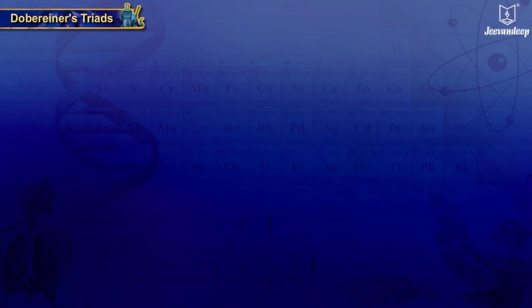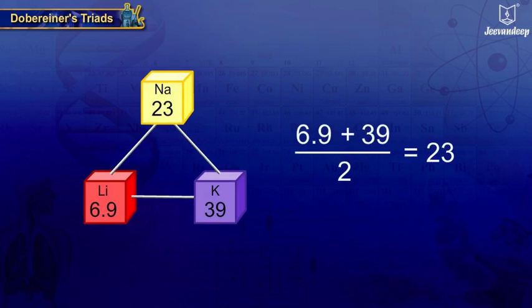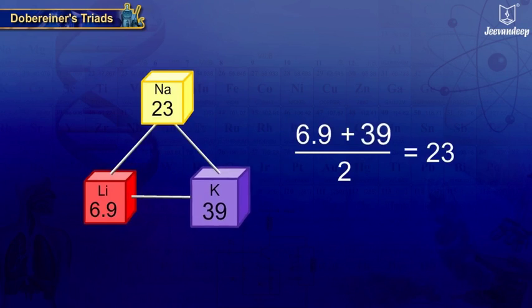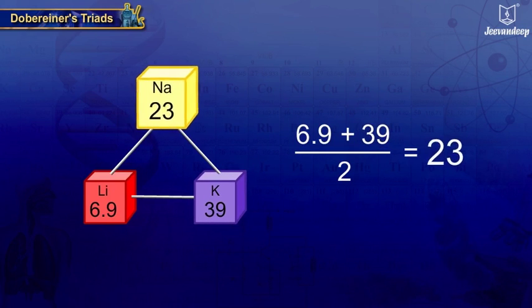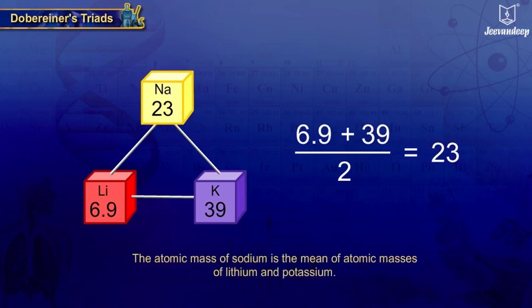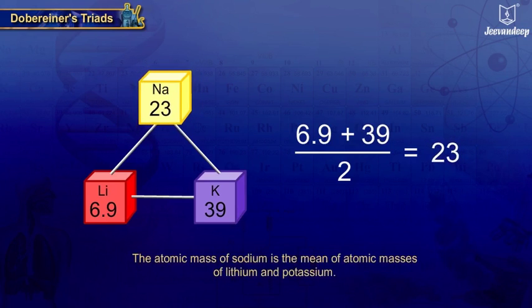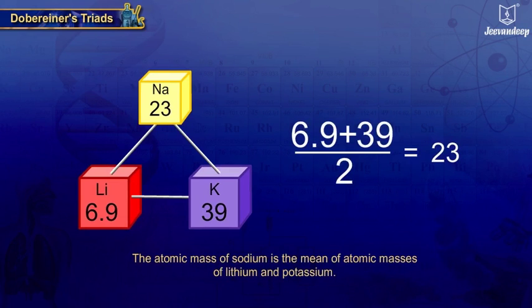For example, the first triad had Lithium with atomic mass 6.9, Potassium with atomic mass 39, and Sodium with atomic mass 23. The atomic mass of Sodium is the mean of the atomic masses of Lithium and Potassium.